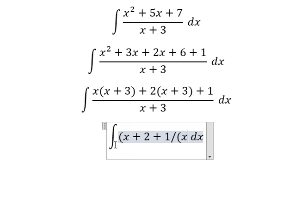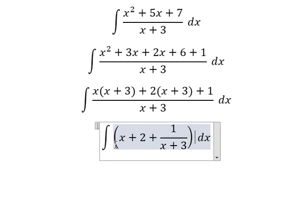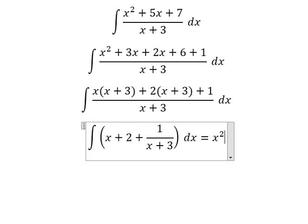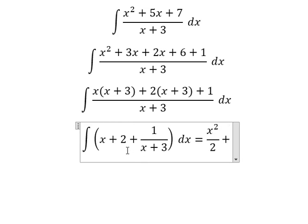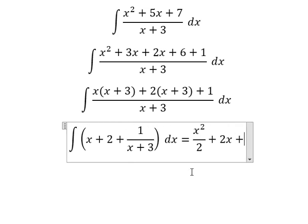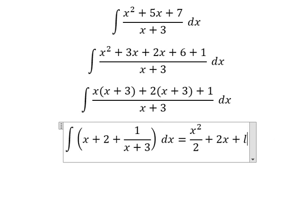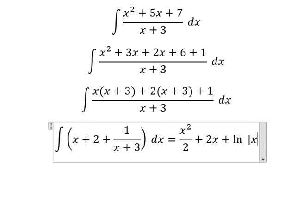The integration of x is x squared over 2. The integration of 2 is 2x. The integration of this one gives us ln of the absolute value of x plus 3, and we add C.